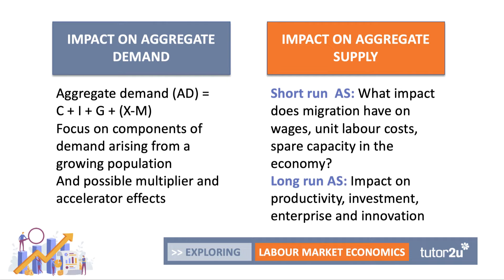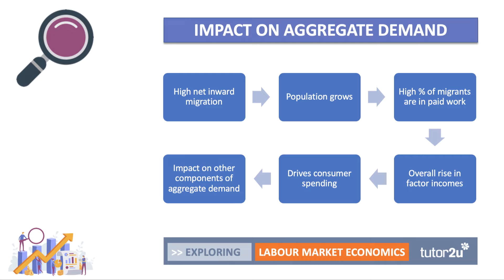What about the impact on aggregate demand? One obvious point is that if there's a high level of net inward migration — for example, at the peak in the UK the net figure was plus 350,000 in one year — then that's going to grow your population. If a high percentage of the people coming into a country are working or in some form of paid work, that in theory is going to add to the factor incomes going around the circular flow of income and spending. A rise in factor incomes will then drive higher levels of consumer spending on goods and services, and of course a rise in consumer spending can also impact on other components of aggregate demand.